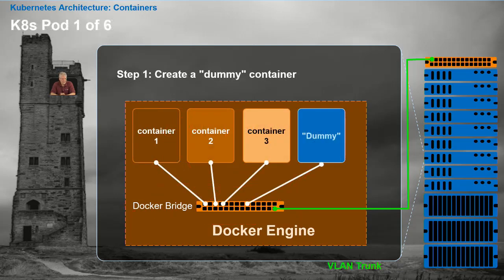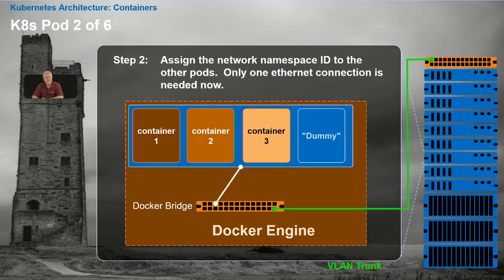Along comes Kubernetes and the invention of the pod. There are several steps to convert Docker containers into a pod. Step number one: what Google did was create a dummy container. Nothing special about it — they would just create it out of the blue. In step two, they assign the network namespace identity of the dummy to the other containers in the pod, putting them all in the same namespace.